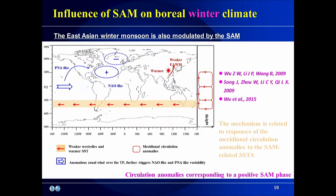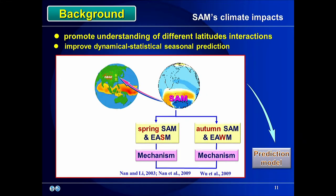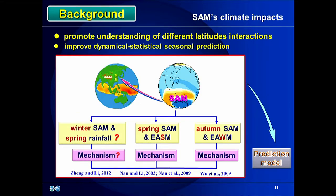On the influence of the SAM on boreal winter climate, the East Asian winter monsoon is also modulated by the SAM, with the mechanism related to responses of the meridional circulation anomalies to SAM-related sea surface temperature anomalies. We then ask whether there are lead correlations between the boreal winter SAM and spring rainfall — if so, what is the mechanism? Here, winter denotes December to February and spring means March to May.